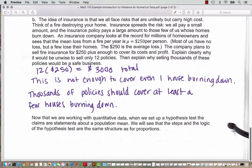The company plans to sell fire insurance for $250 plus enough to cover its cost and profit. Explain clearly why it would be unwise to sell only 12 policies. Then explain why selling thousands of these policies would be a safe business. So if we check, 12 policies times $250 is only $3,000 total. This is not enough to cover even one house burning down.